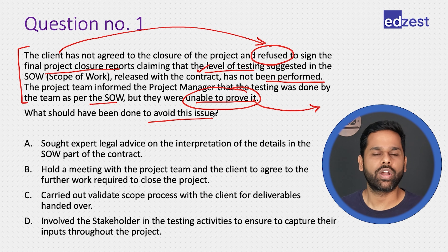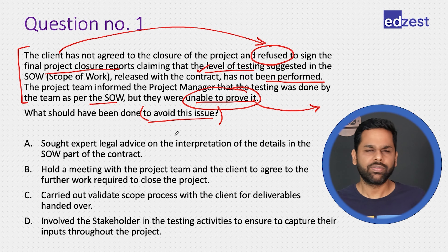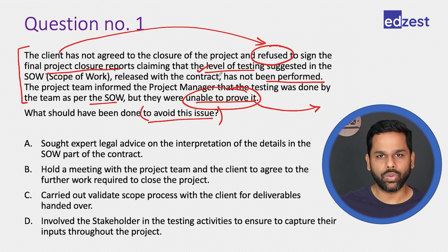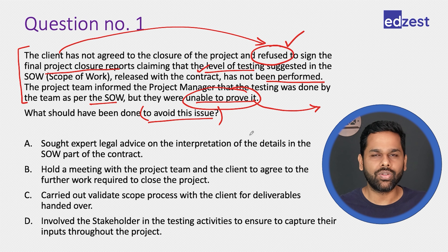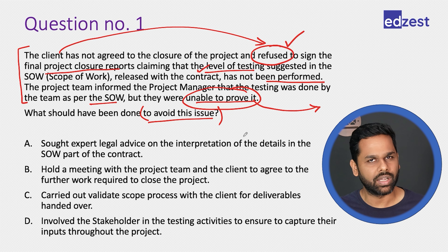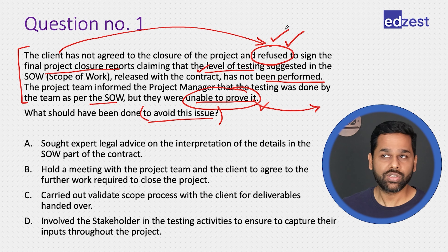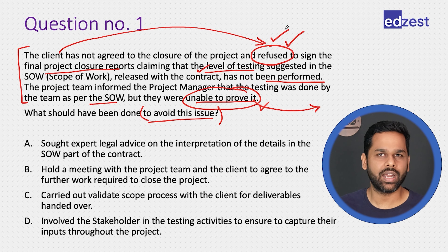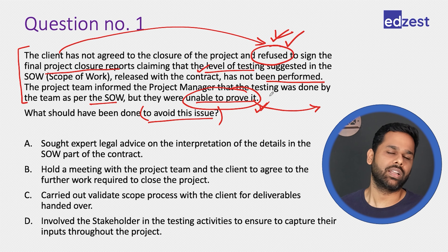Whenever you see a question asking what should have been done to avoid the issue, it is very important to understand what the issue is. The issue is the refusal to sign. In order to avoid an issue, you also need to know the reason. The reason is the team is not able to prove something, and that is why the client is refusing to sign off. It is not that the team did not conduct the testing — that is not the issue.